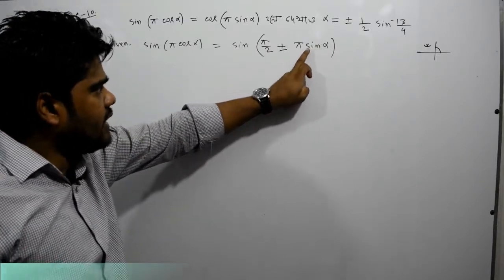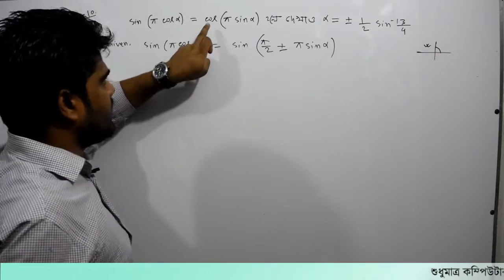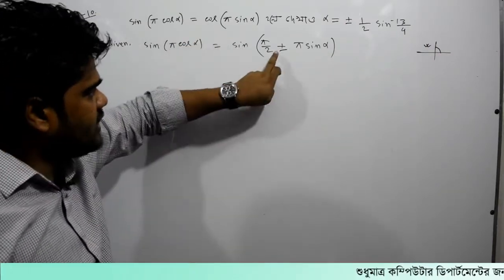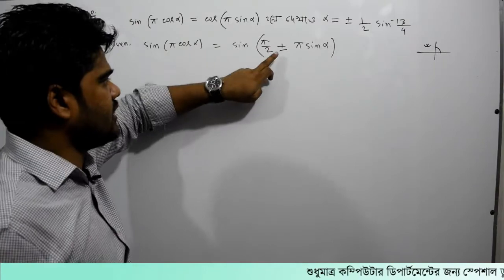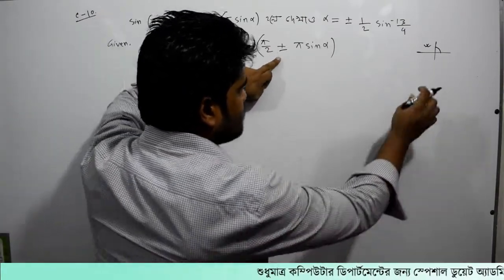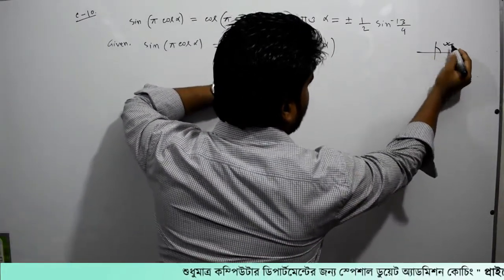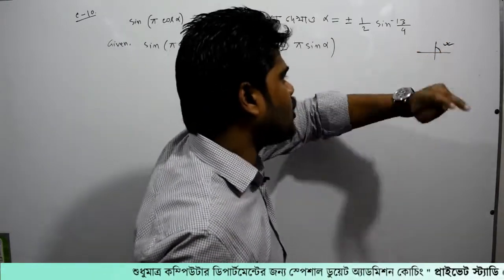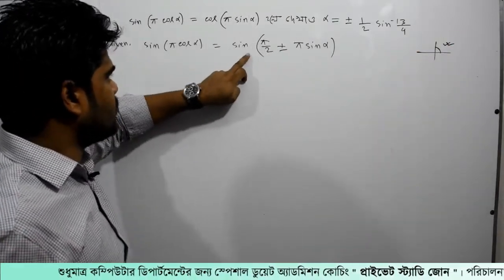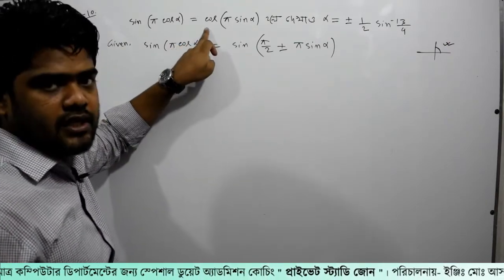So this is the second quadrant of sin, and the second quadrant of sin is plus or minus. So this is minus. Which quadrant is 90 minus? This is the second quadrant of sin, and the first quadrant of sin is minus. So this is minus; cos is also minus; sin plus is plus.